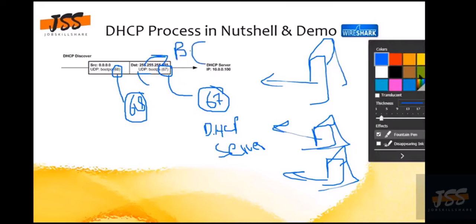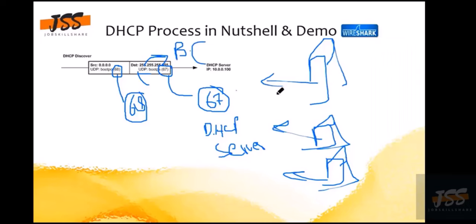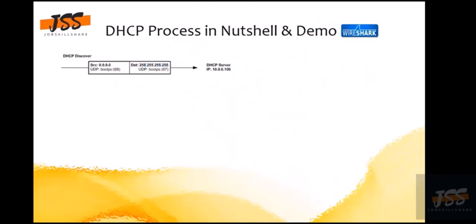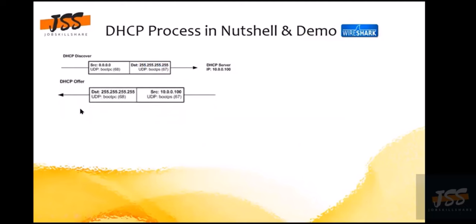All DHCP servers in the broadcast domain will receive this discover packet. Whoever receives it first is going to entertain the host machine. The second packet in DORA is the Offer. The server has not yet assigned the IP — it is just offering: 'this is what I have and I can offer it.'